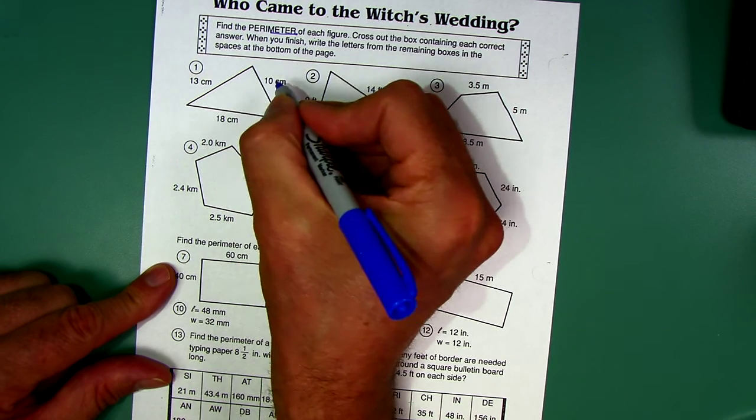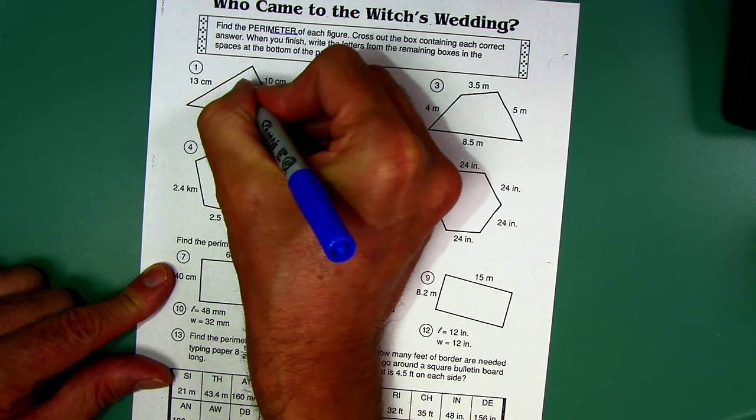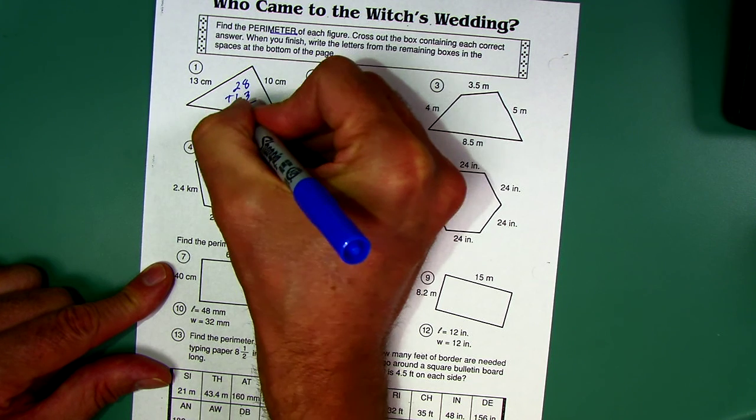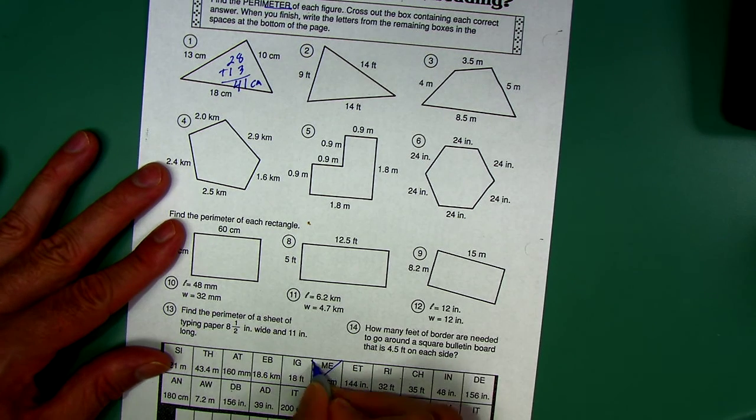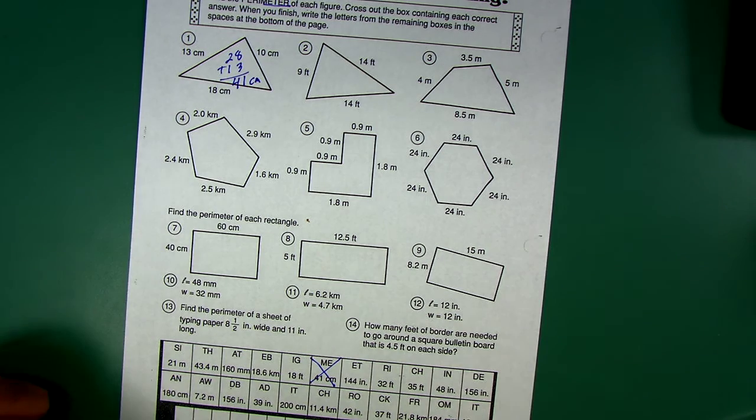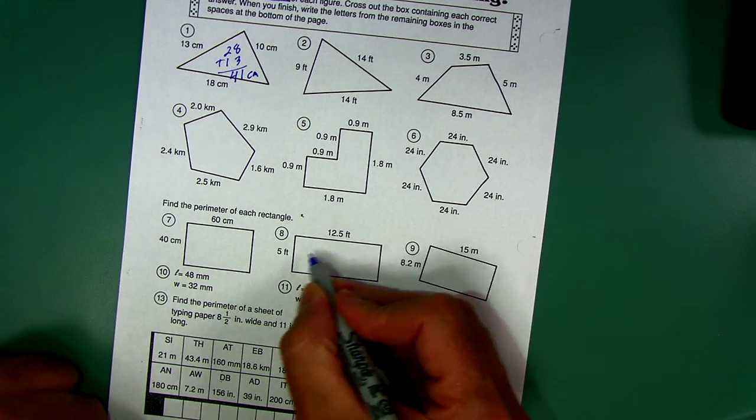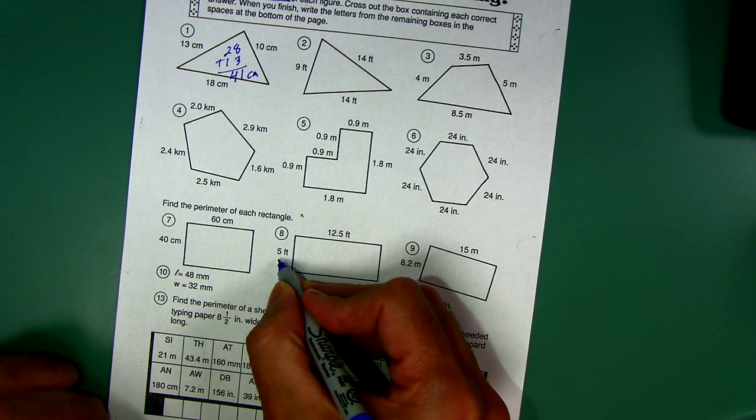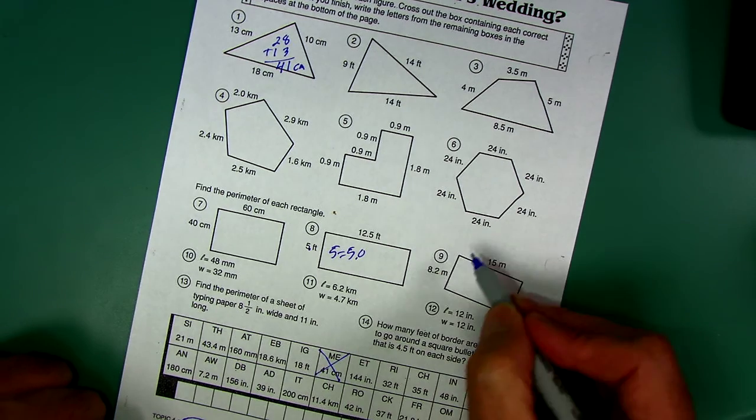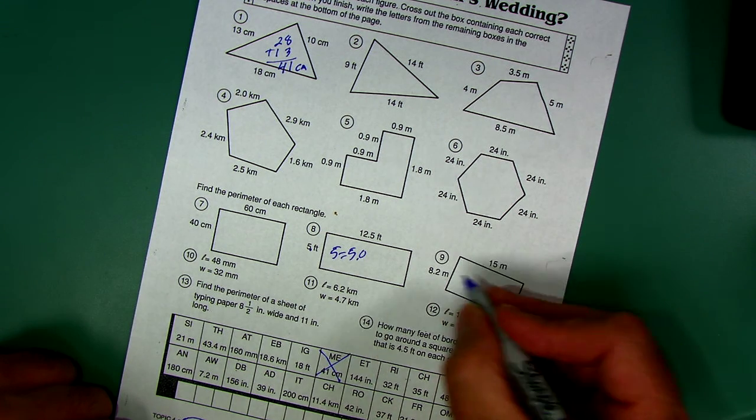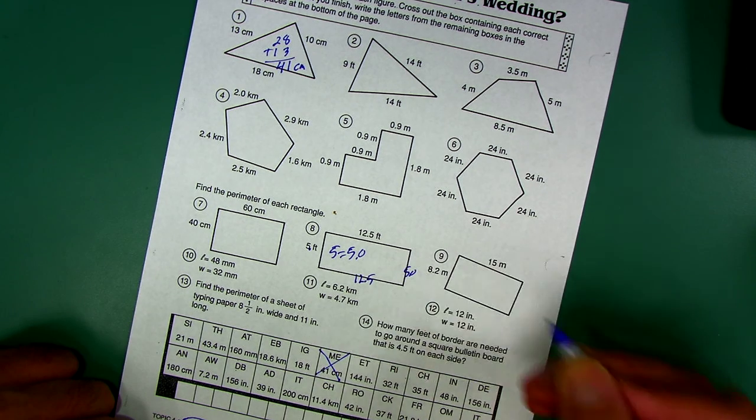What am I doing? I'm adding 10 plus 13 plus 18. I'm going to add the 10 and the 8 because that's 28. That looks like it's 41 centimeters. I go down and find 41 centimeters, cross it out. Remember, some of these are decimals. Line up the decimals. Here I have 12.5 and a 5. Where's the decimal go on the 5? To the right. 5 is the same as 5.0.